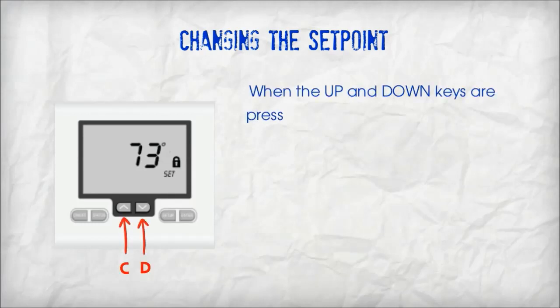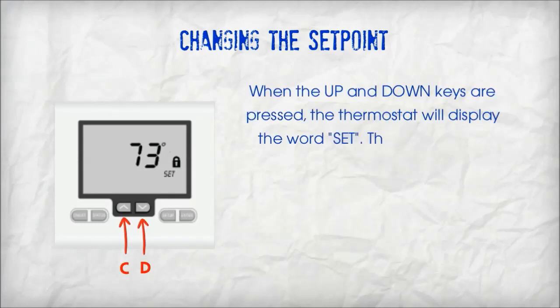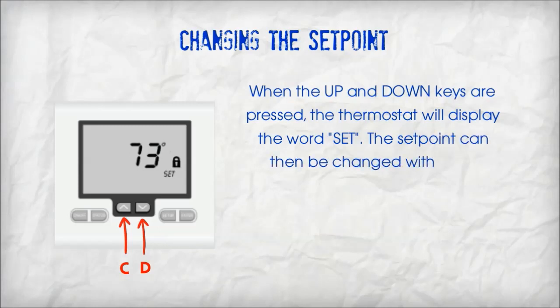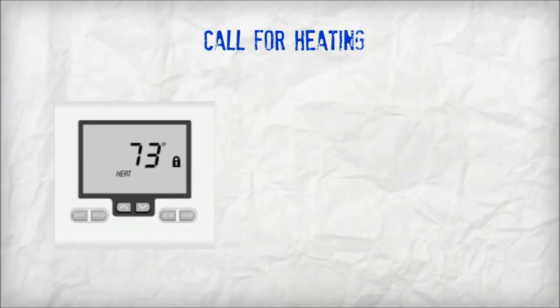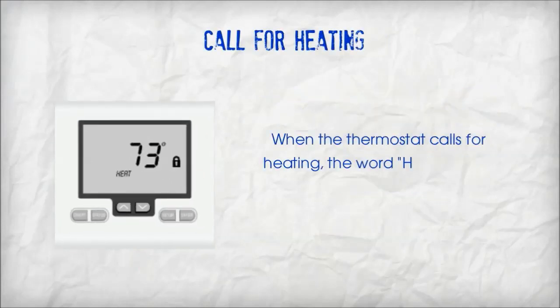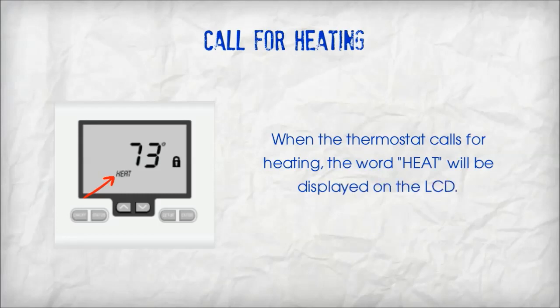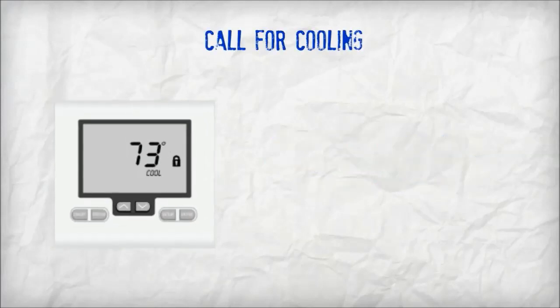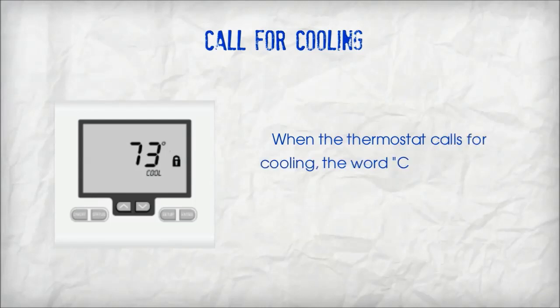When the up and down keys are pressed, the thermostat will display the word 'set', and the set point can then be changed within the set point limits. When the thermostat calls for heating, the word 'heat' will be displayed on the LCD. When the thermostat calls for cooling, the word 'cool' will be displayed on the LCD.